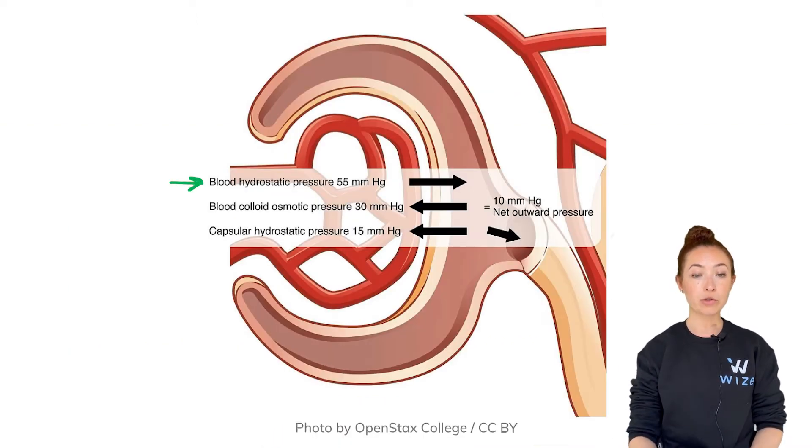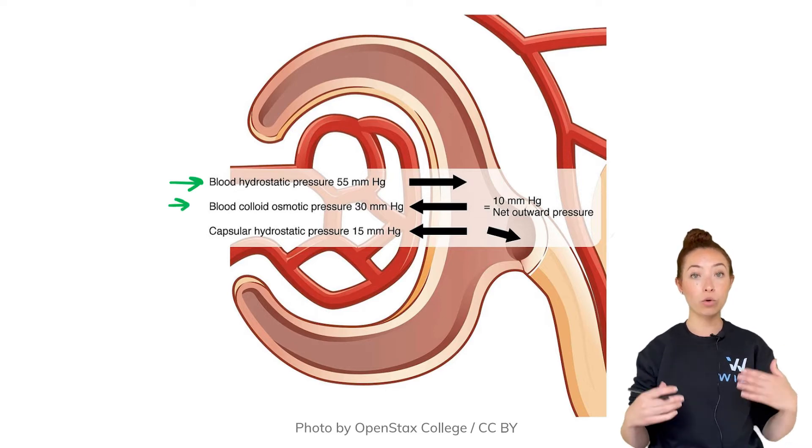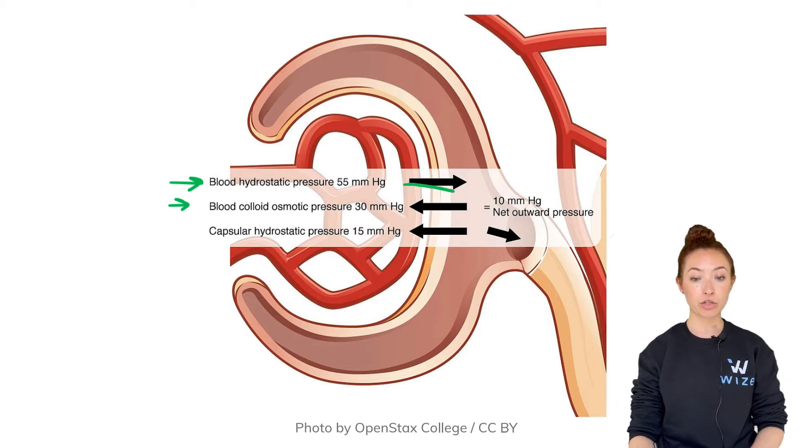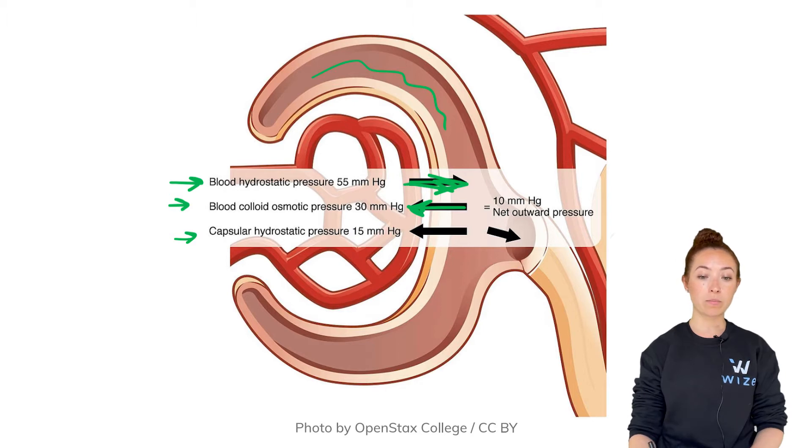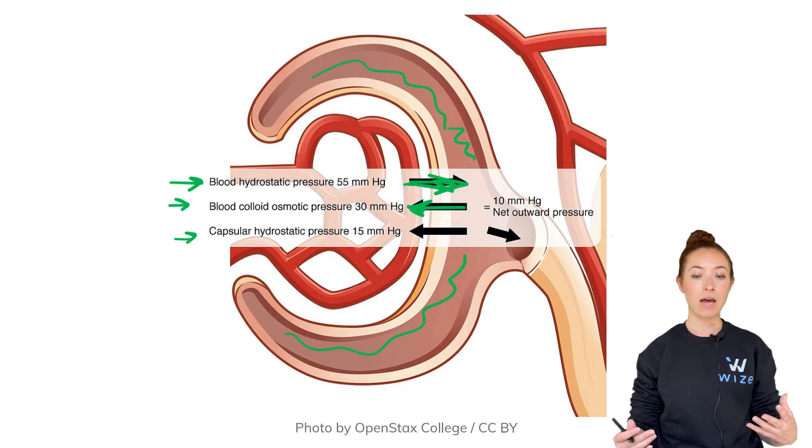Recall that there's always some hydrostatic pressure from blood and some oncotic or colloid osmotic pressure from blood that's actually drawing fluid back while the hydrostatic pressure is pushing it out, pushing out some of the fluid and electrolytes while the oncotic pressure draws it back. And then there's some capsular hydrostatic pressure as well that's being exerted by the Bowman's capsule or whatever is already in the Bowman's capsule.